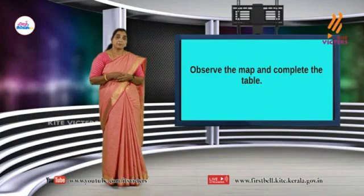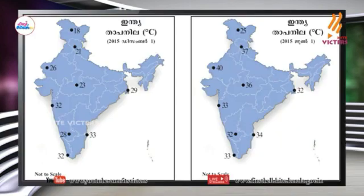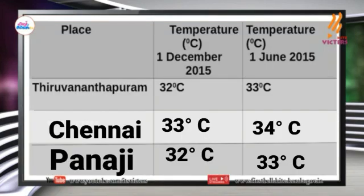Please like, observe the map and complete the table. Now I am going to look at the map. This is our map. This is our table. It looks like there are 3 places.